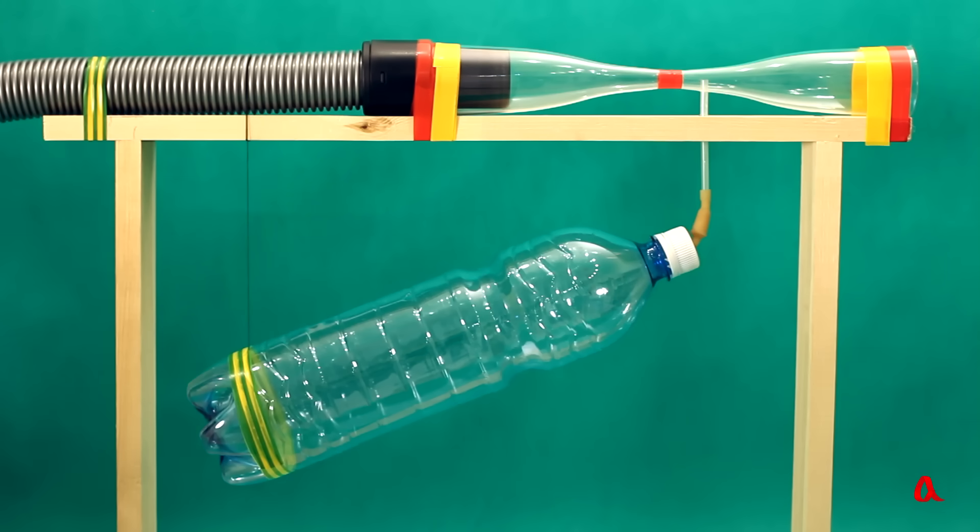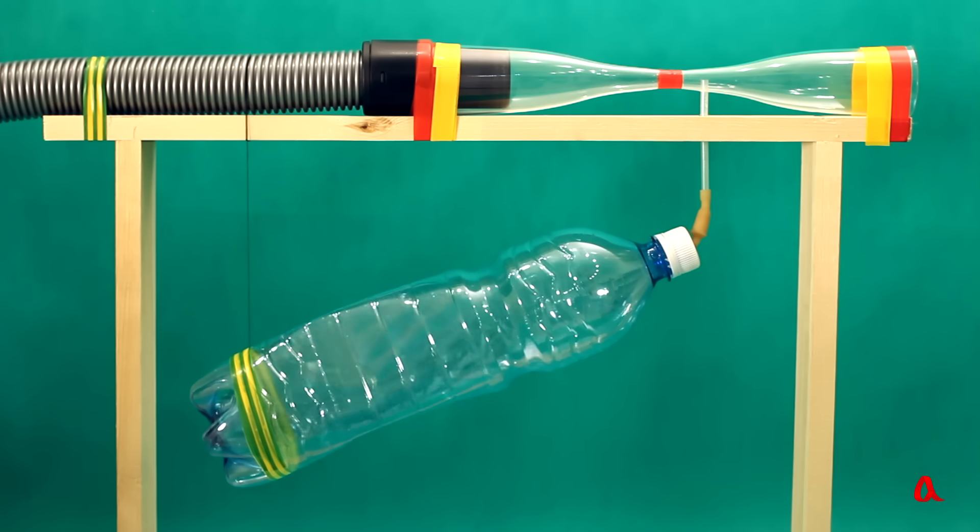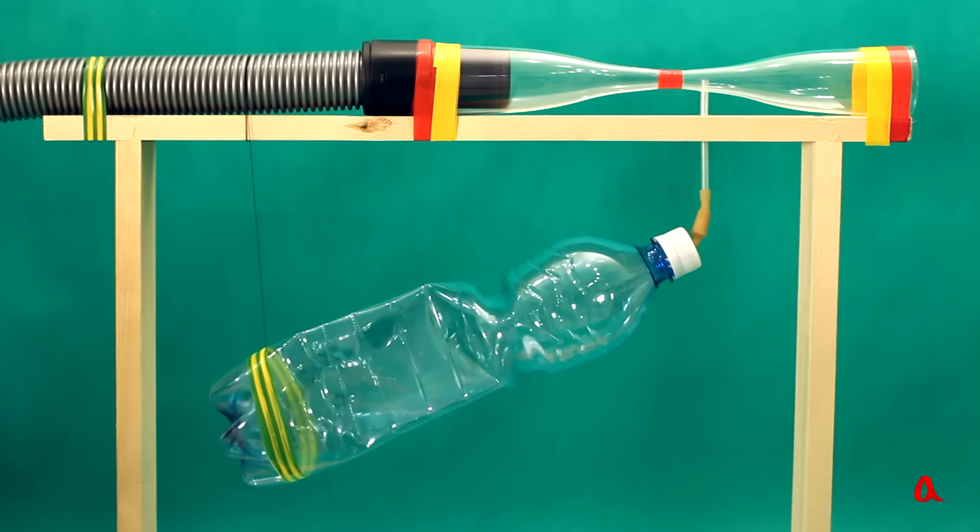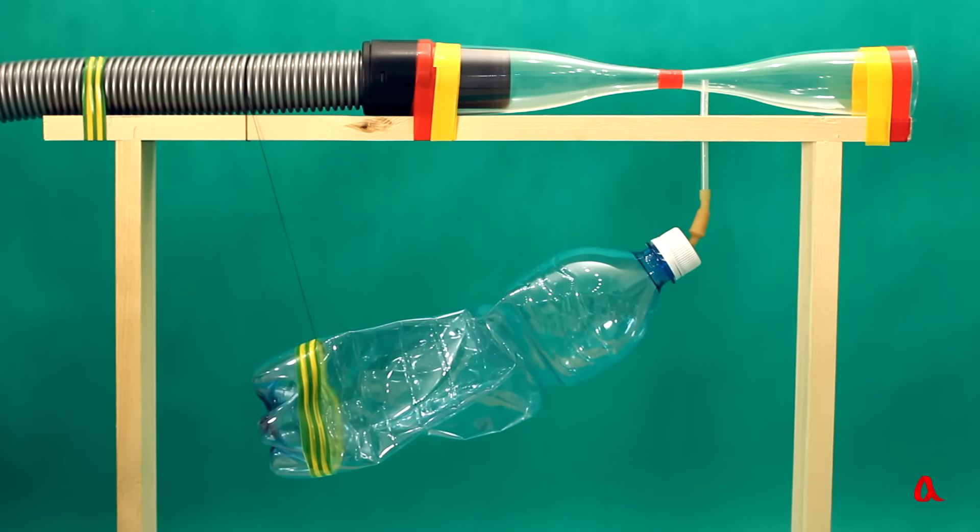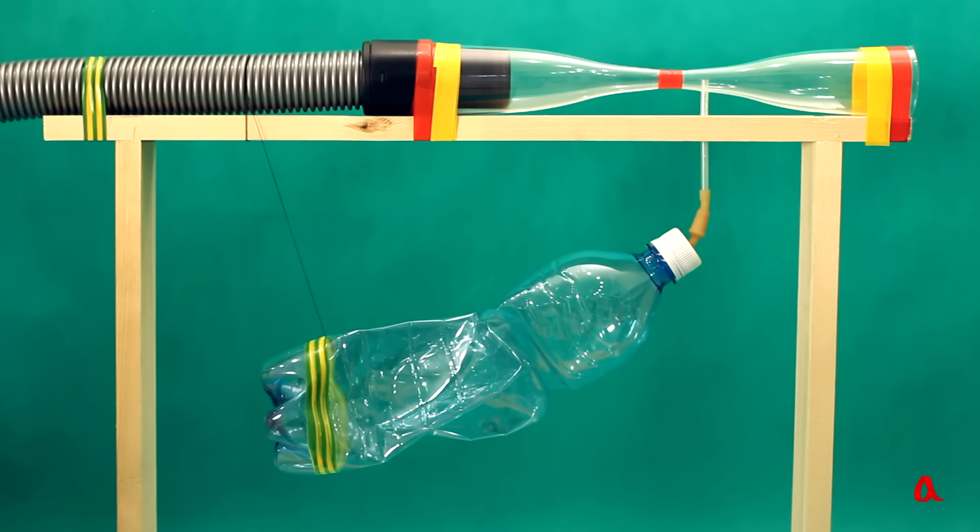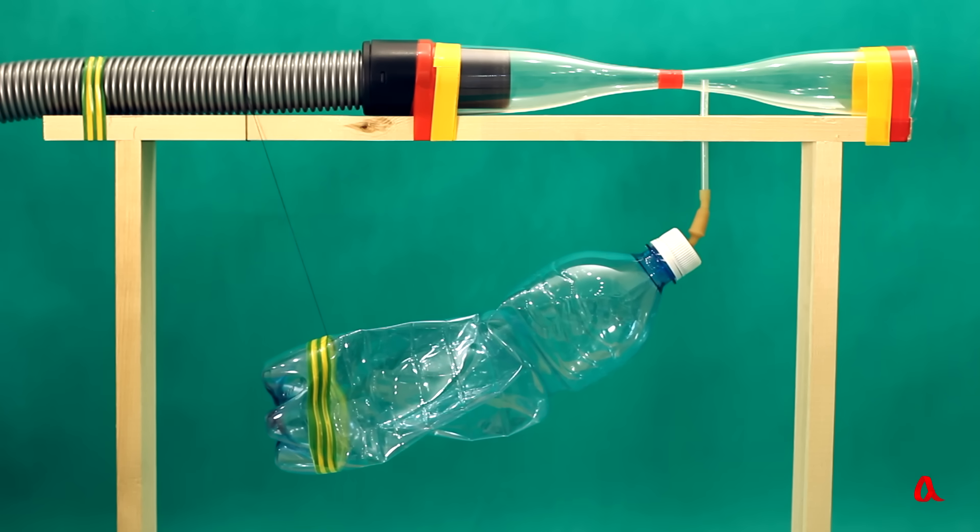Now let us attach a plastic bottle to the pipe and switch on the blower again. That's incredible! A decrease in the internal pressure causes the bottle to be crumpled by the outer atmospheric pressure.